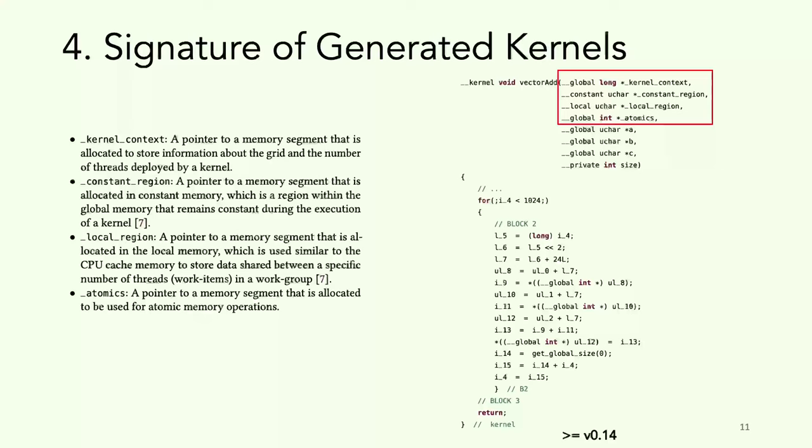The second regards allocated constant memory, part of the global memory DDR used only for read-only data. The third is the local region, a pointer to a memory region accessed for local data by threads in the same work group. The final one is atomics, a memory space reserved for atomic operations. All four parameters are TornadoVM specific, meaning the kernel cannot automatically be transferable to different programming languages and runtimes. The remaining four parameters are from the equivalent Java method for vector addition.